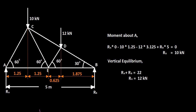To summarize the distances: 2.5, then 1.25, 1.25, 1.25, 0.625, and 1.875. The distance AG is 3.125 meters from A to G.